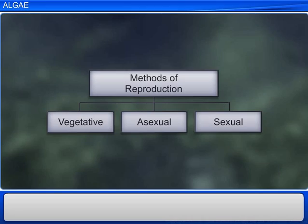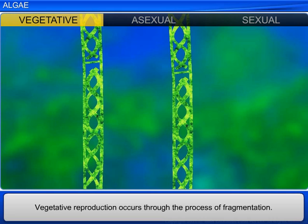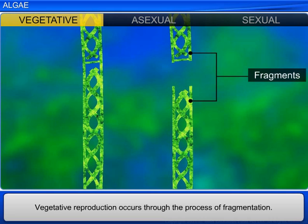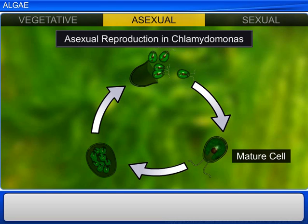Algae reproduce through vegetative, asexual, and sexual methods. Vegetative reproduction occurs by the process of fragmentation, wherein each fragment develops into a thallus, while asexual reproduction takes place through spores like zoospores. These spores are flagellated and germinate into new plants.